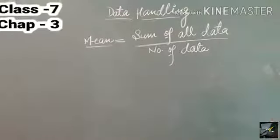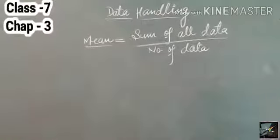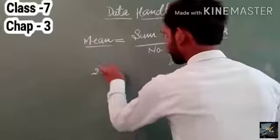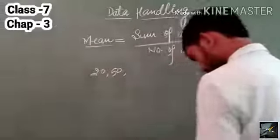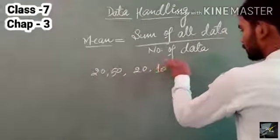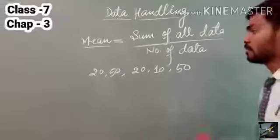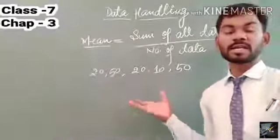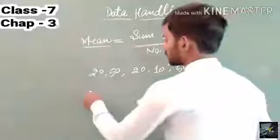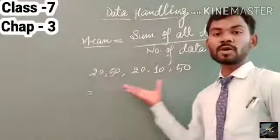The first question is: given the data 20, 50, 20, 10, and 15. We have to find out the sum of all this data.